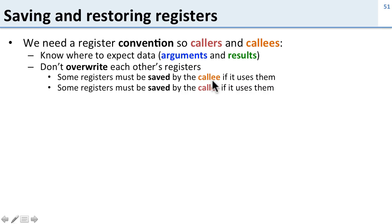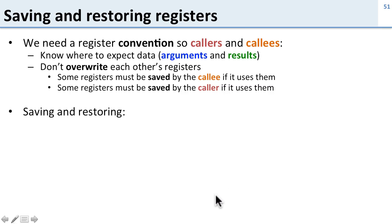If the callee uses some of these callee-saved registers, then it has to save them. And if the caller uses some of the caller-saved registers, then it has to save them. So we divided up who saves what between the callee and the caller.